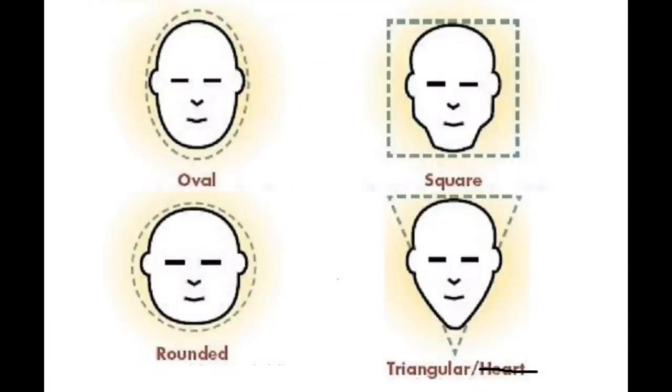Step number one: identify your face shape. There are four different options and you are one of them — oval, square, round, or triangle. You may find other shapes in books but really when you break it down there are four. And just like with glasses, choosing a hairstyle based on your face shape is all about balance and contrast.